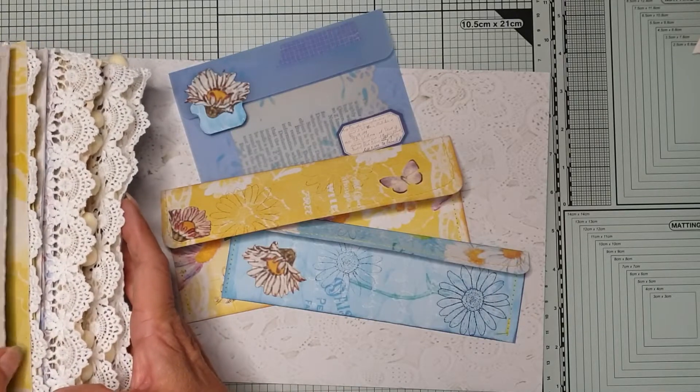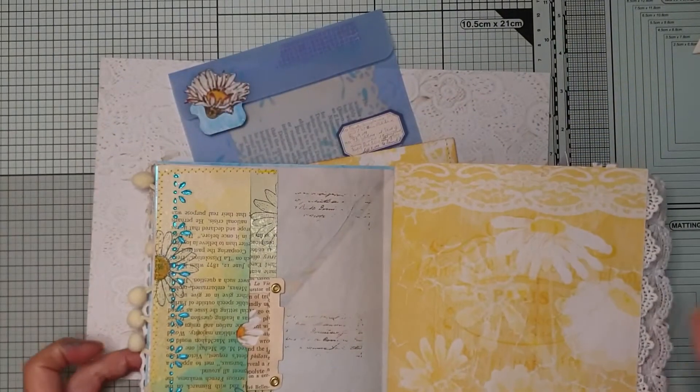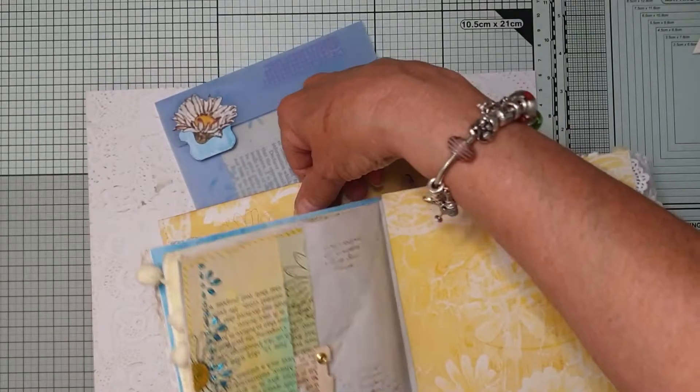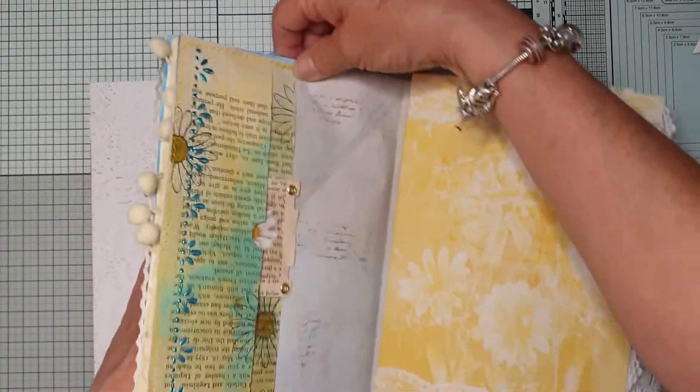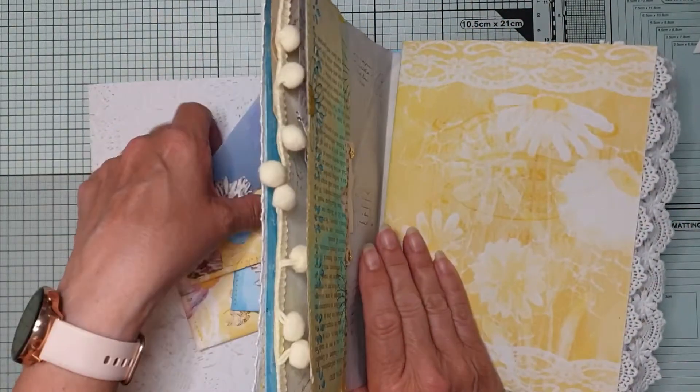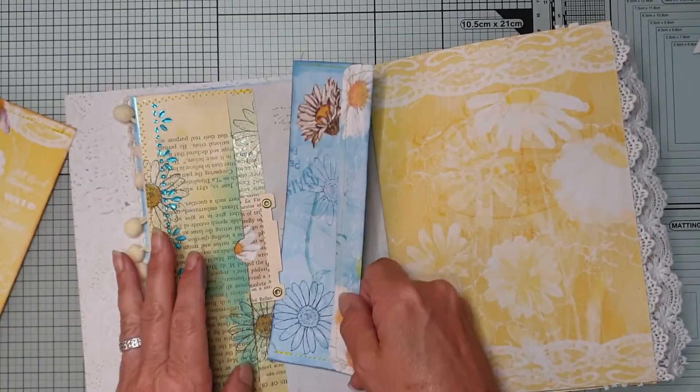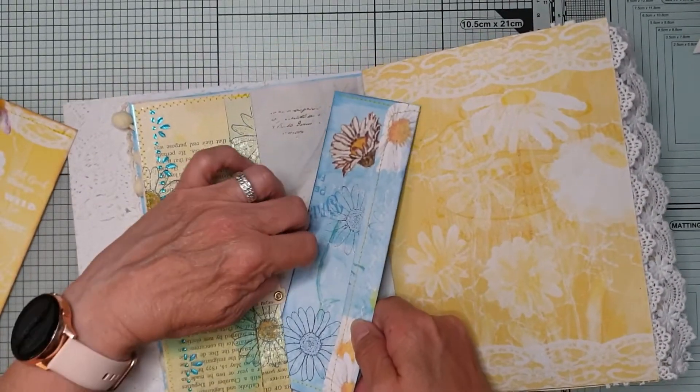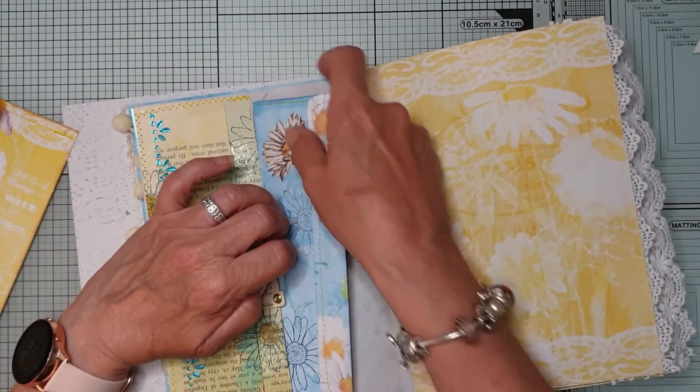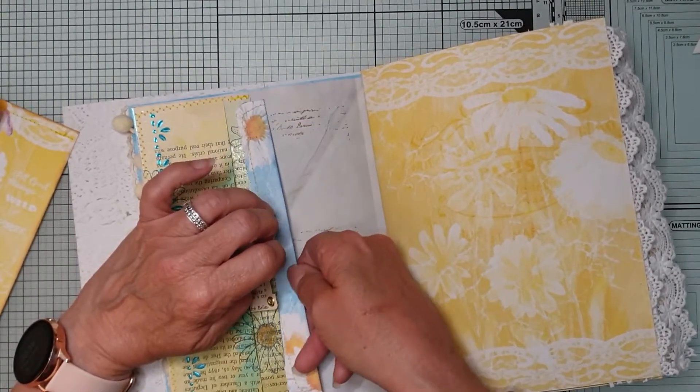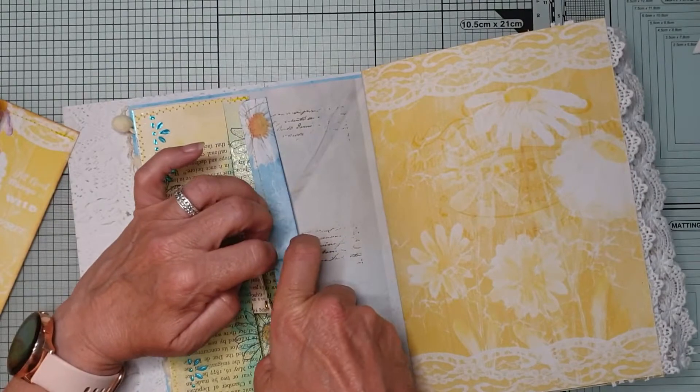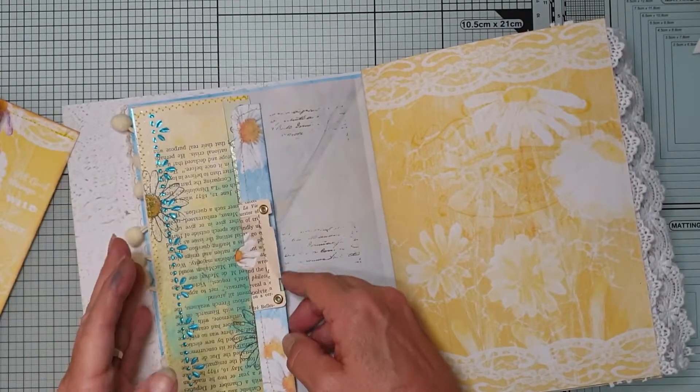But what I did do was I stenciled it and the reason for the long pockets is to fit in these. I did three of these and I like my envelopes in these pockets. Because I like the little flap of the envelope to fit over like that.